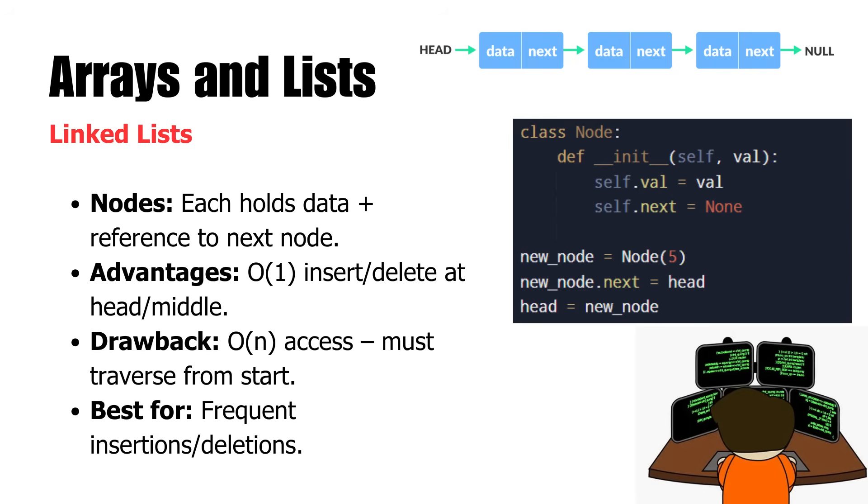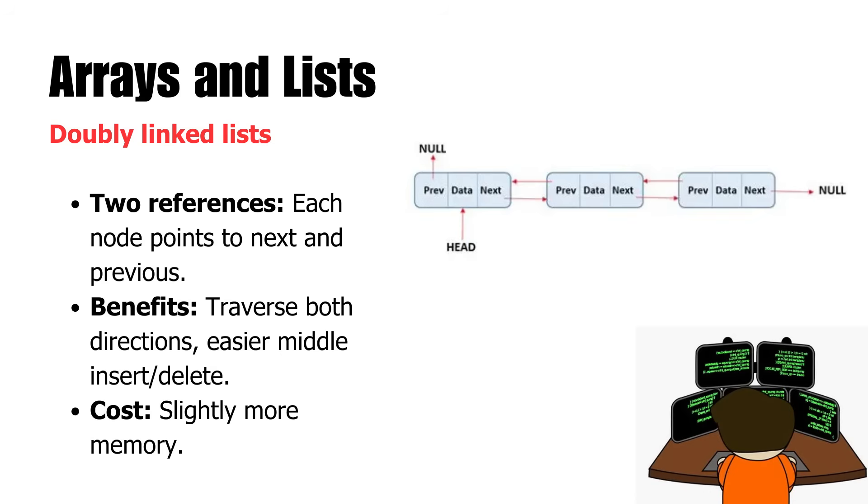This allows for efficient deletion and insertion, specifically at the front or middle of the list because only a few references need to be changed. The disadvantage is that elements take longer to access as the list needs to be traversed from the start. Linked lists also have a variant named double-linked list that has both next and previous node references and can be traversed in both directions, rendering it even more versatile.